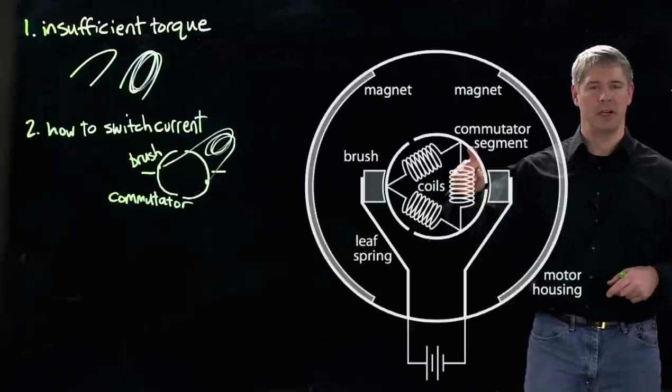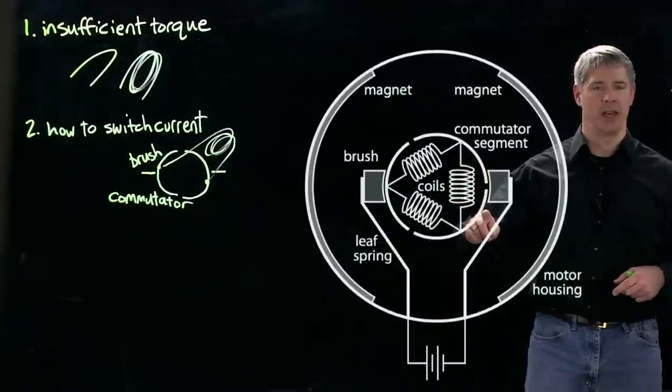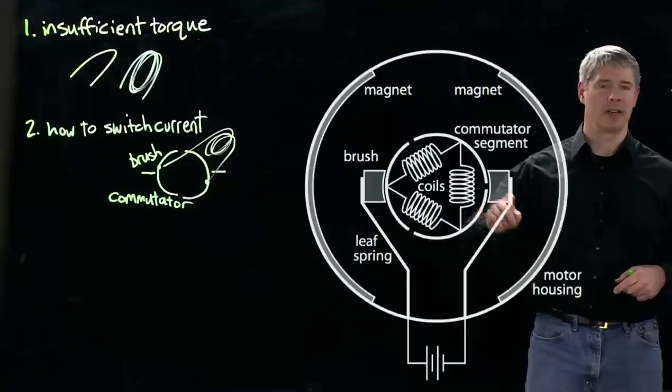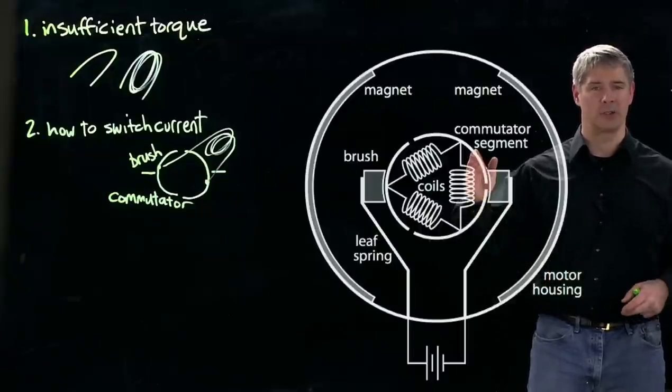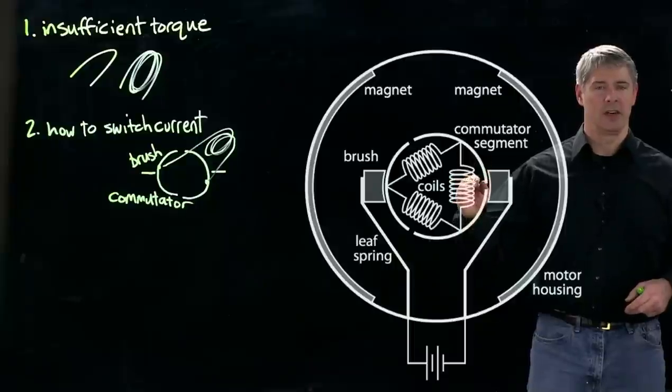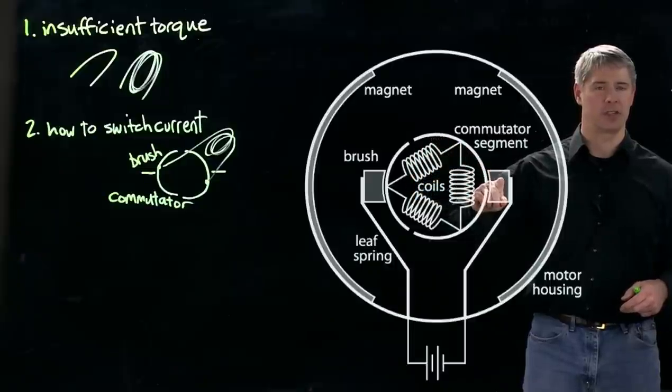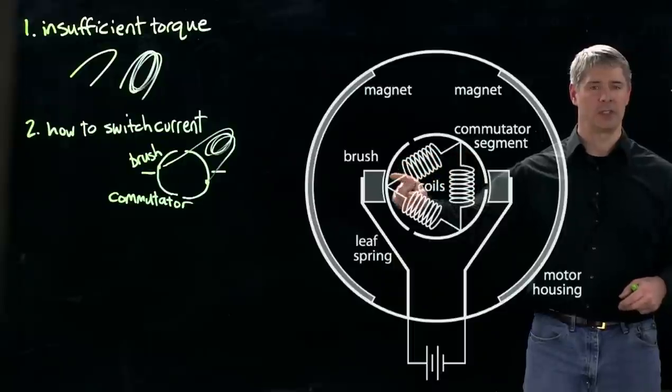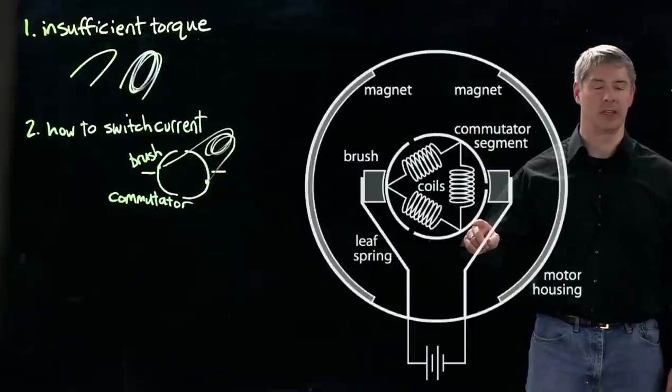In this example here, this coil right here is attached to a commutator segment and another commutator segment, making contact with the same brush. Therefore, there's no voltage across it, and this coil is not energized. On the other hand, this coil is energized because it's making contact with this commutator segment and therefore this brush, and this commutator segment and therefore that brush. So these two coils are energized, creating torque to drive the motor. Currently, this coil is doing nothing.